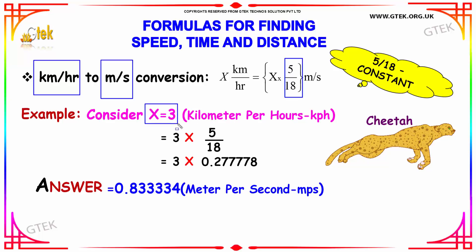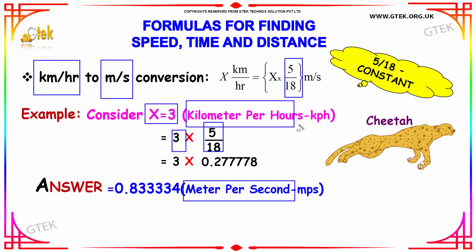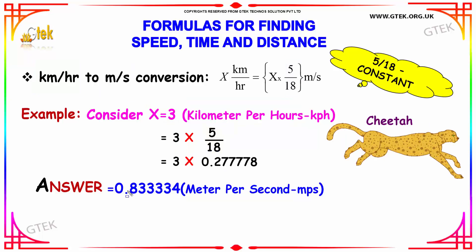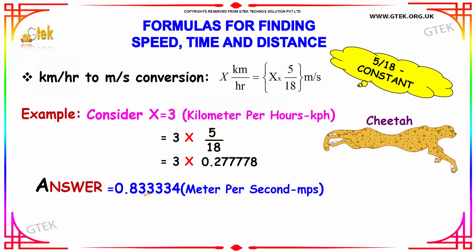If x equals 3, then 3 into 5 divided by 18 you'll get meter per second. So your kilometer per hour can be converted to meter per second by multiplying with 5 divided by 18. Here, 3 into 5 divided by 18 gives 0.833.